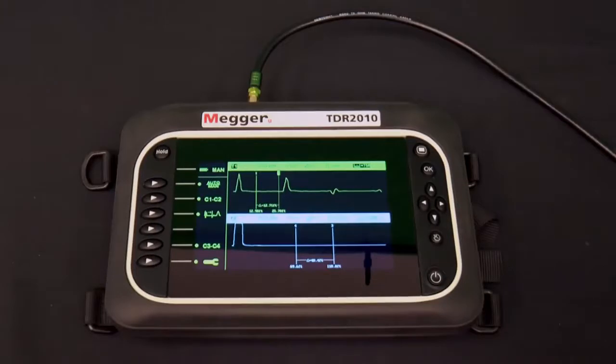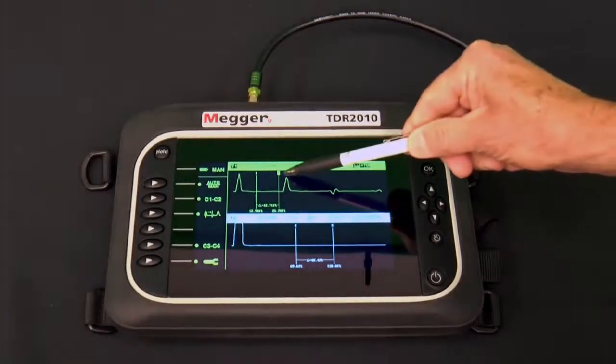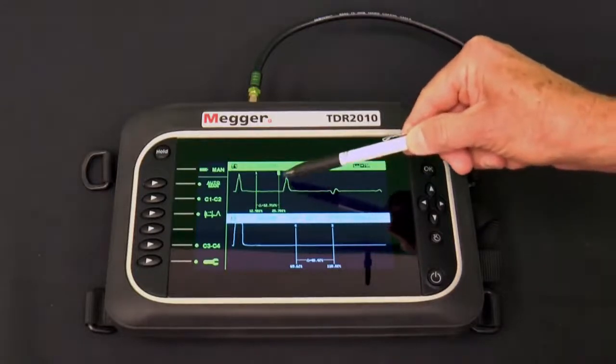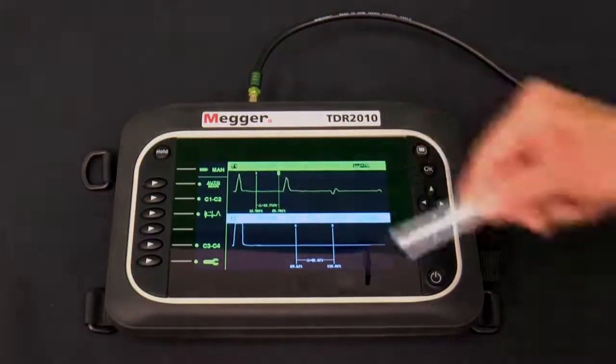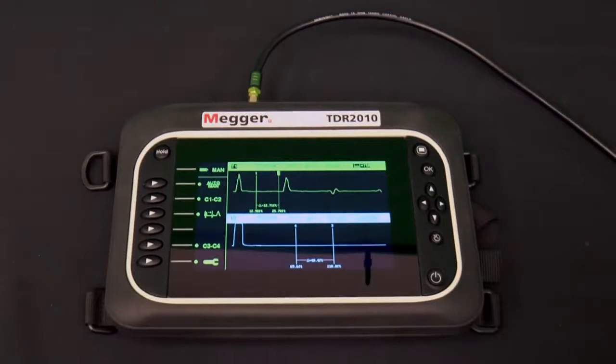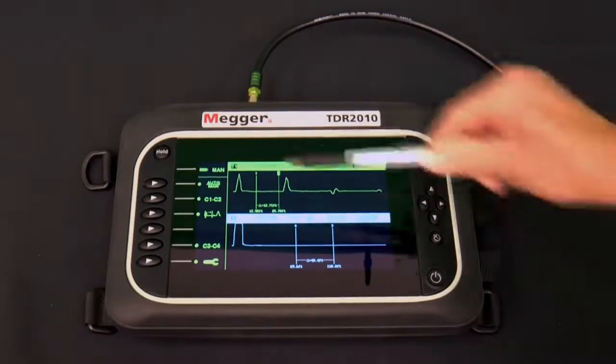In this case, there are four cursors on the screen. The active one, the one that is controlled by the left and right arrows of the navigation group, is a dashed line. The other three are solid lines.